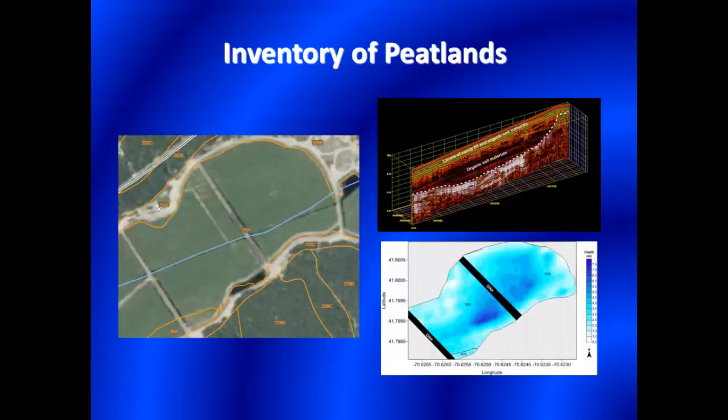Peatlands comprise more than 50 percent of the global wetlands. The effective use and management of peatlands requires knowledge of the thickness, distribution, and volume of peat. Compared to traditional surveying methods, GPR is faster and requires significantly less time and effort to obtain similar information. Here we see an aerial photograph, radar record, and computer simulation of the thickness of organic materials within a cranberry bog located in eastern Massachusetts. At this site, GPR data were used in the planning of a wetland restoration project that recreated the natural stream channel across this wetland.